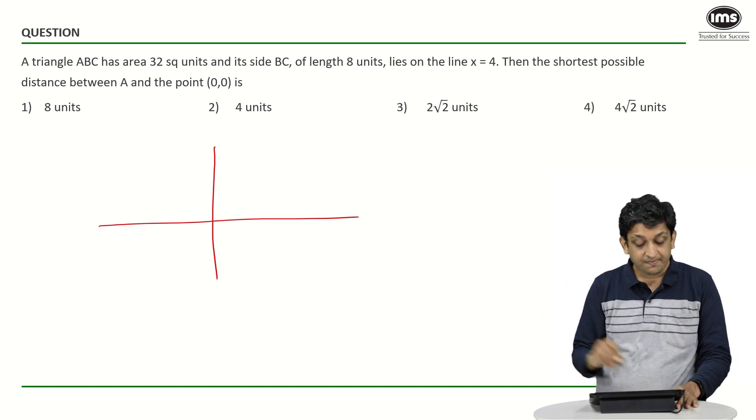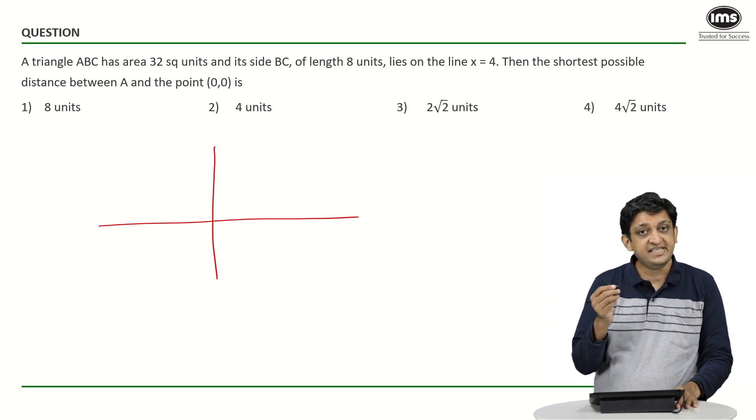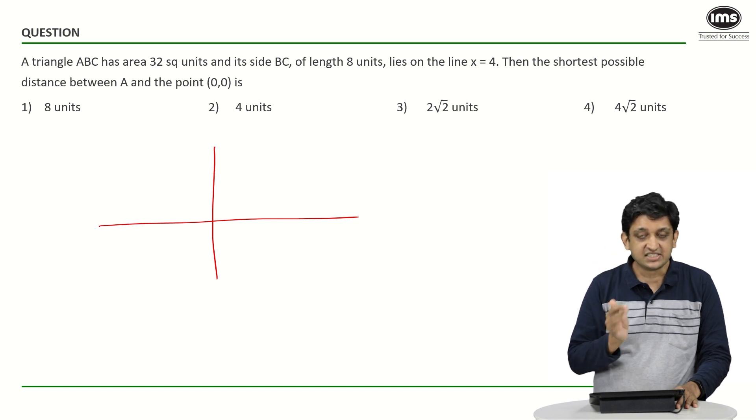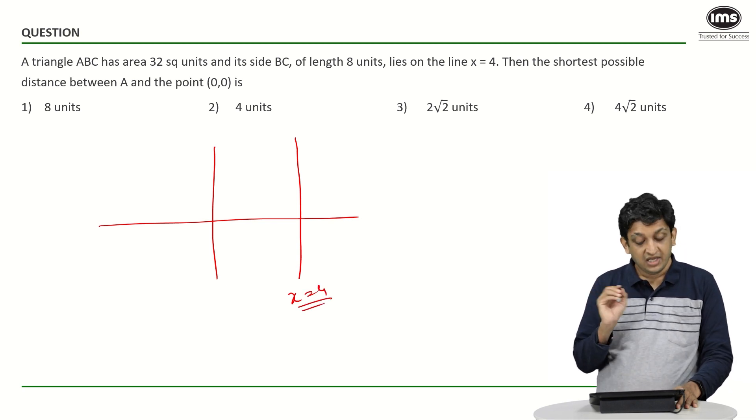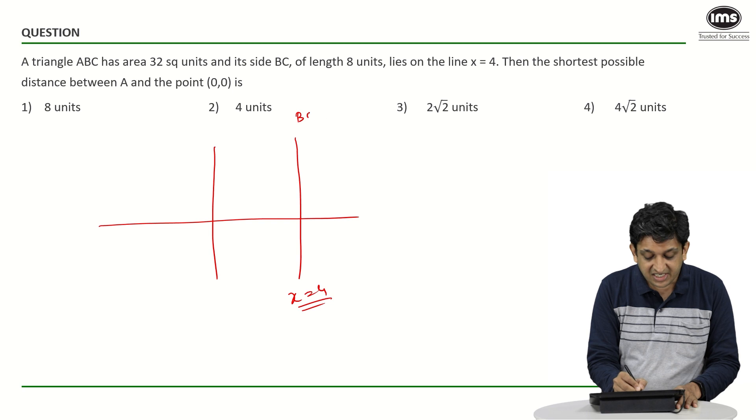We'll plot the x-y axis first. We know that the side BC of length 8 units lies along x equals 4, so let us draw this line where x equals 4 is the equation of this line.